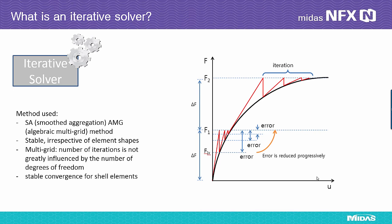The AMG method uses multigrid, so the number of iterations is not greatly influenced by the number of degrees of freedom. It also exhibits stable convergence when using elements consisting of displacement and rotational degrees of freedom at each node, such as shell elements. The iterative solver using the AMG method automatically composes multigrids, which are created by the sets of neighboring nodes and the degree of freedom representing each set of nodes.